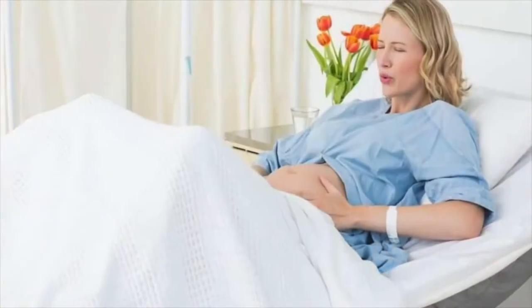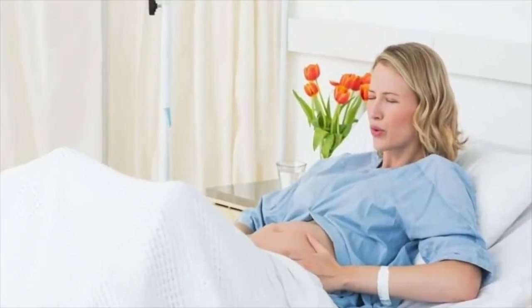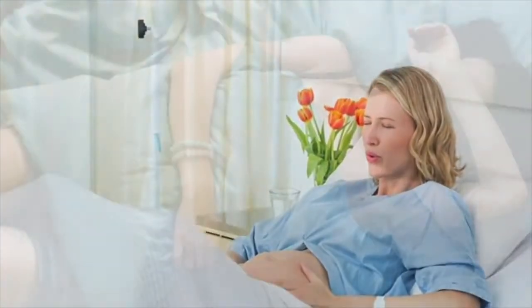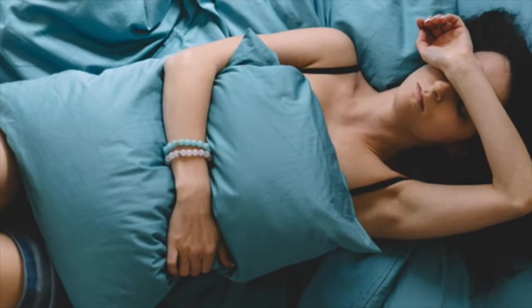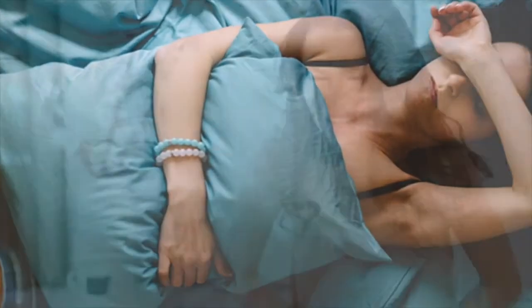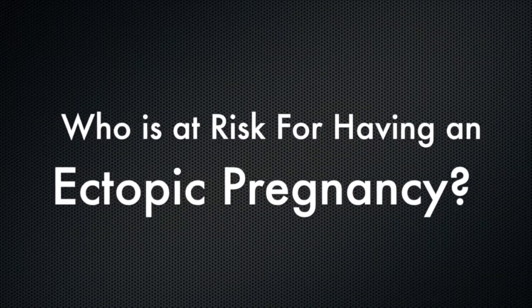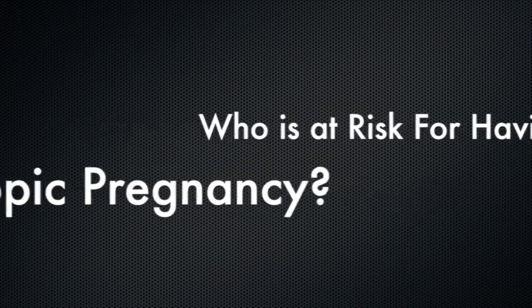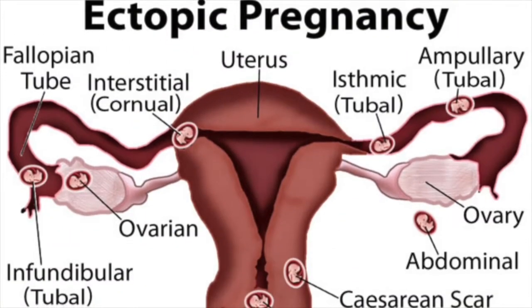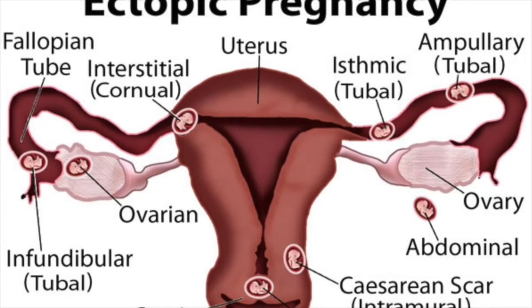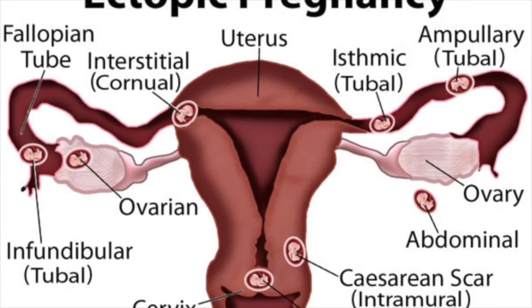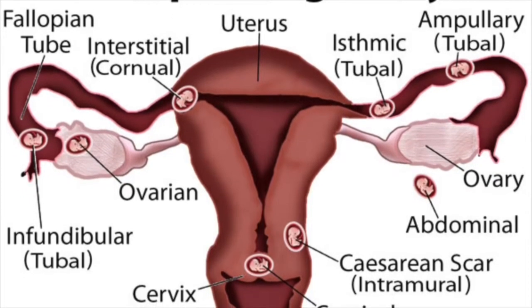Previous surgery in the pelvic area or on the tubes can cause adhesions. Abnormal growths or a birth defect can result in an abnormality in the tube's shape, which can also result in an ectopic pregnancy.